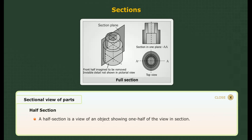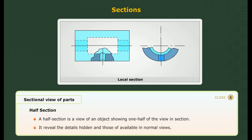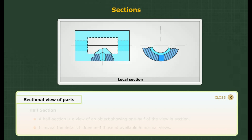Half section: A half section is a view of an object showing one half of the view in section. The diagonal lines on the section drawing indicate the area that has been cut. When one half of the part is selectively sectioned, the half section can reveal hidden details alongside those available in normal views.